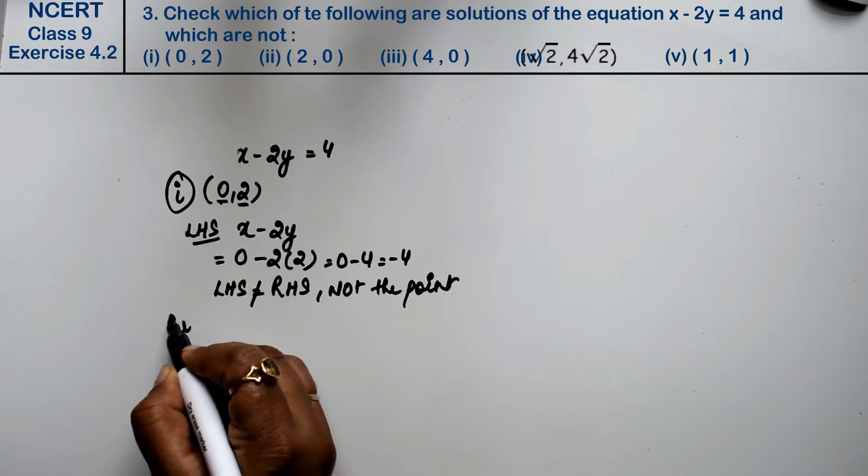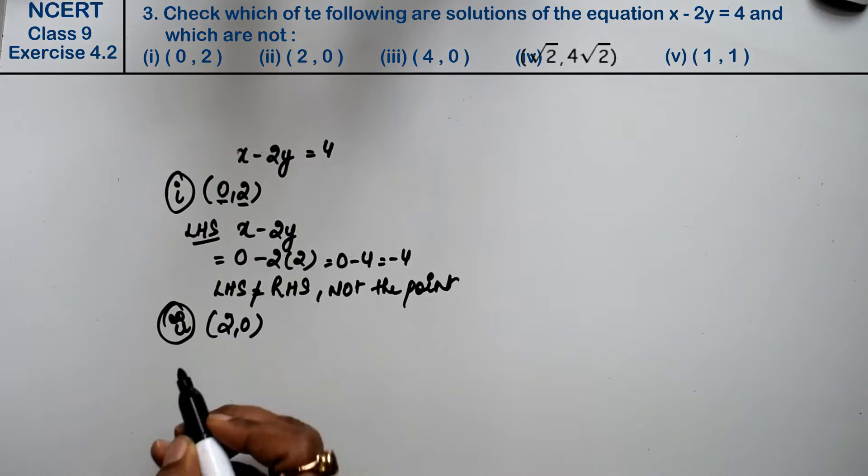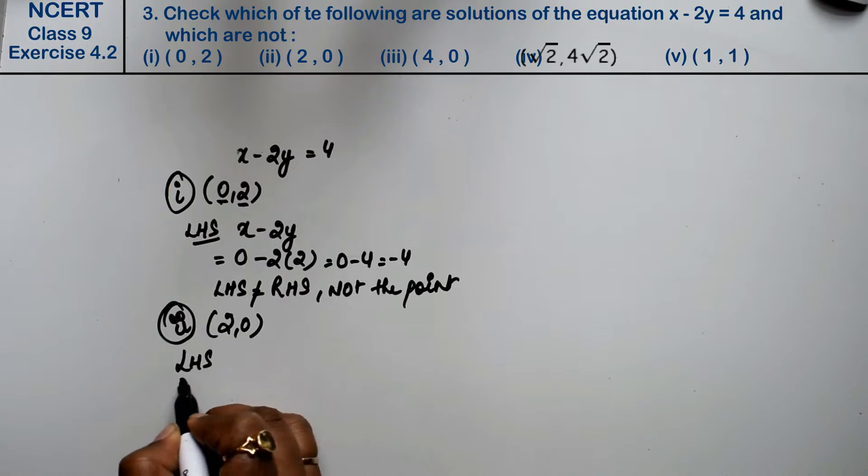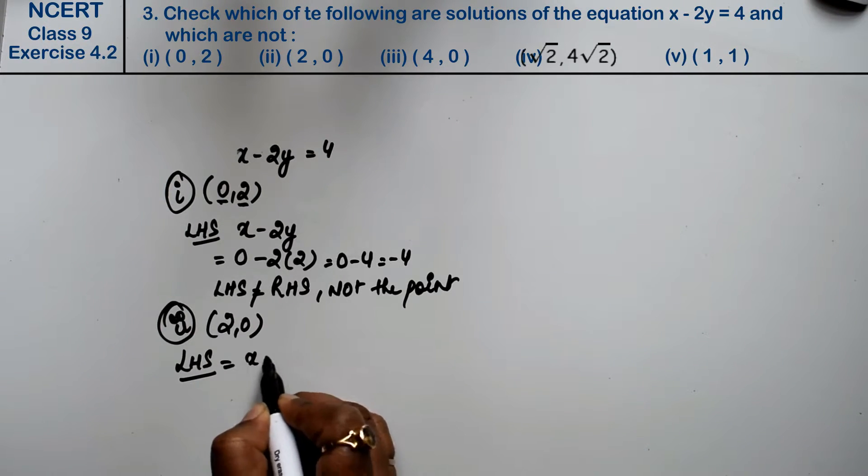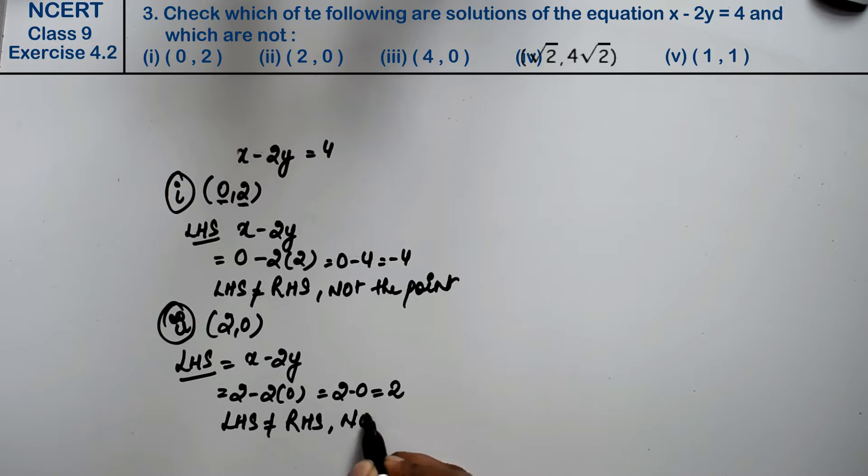Let's do second part. Second part is (2, 0). Let's see left-hand side: x minus 2y is 2 minus 2 into 0, that means 2 minus 0 is 2. Again, left-hand side is not equal to right-hand side. Hence, not a point.